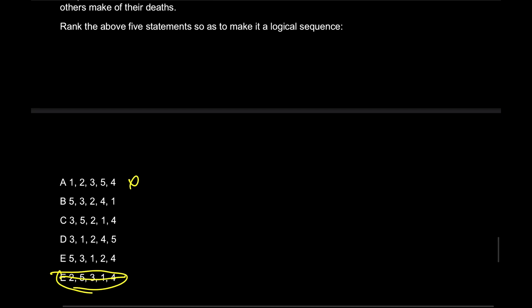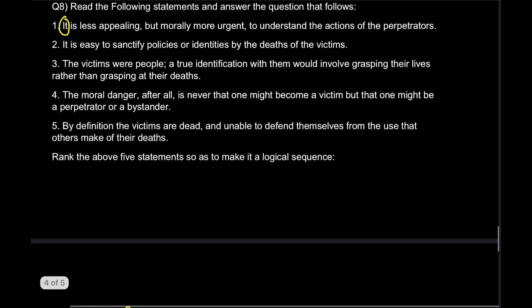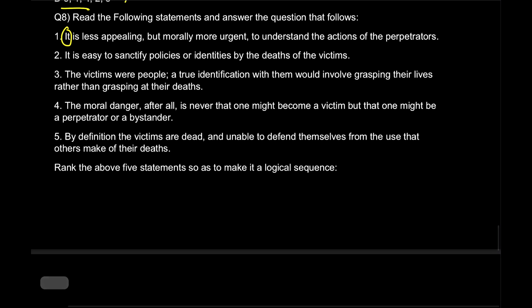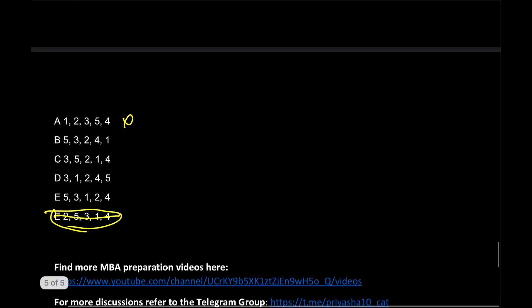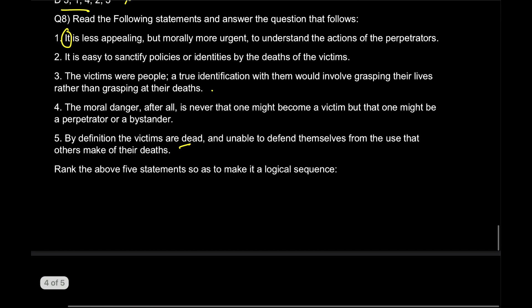Then number three is 'the victims were people. A true identification with them would involve grasping their lives rather than grasping at their death.' Sounds good to me. Number five: 'By definition the victims are dead.' This is continuation of idea. Five cannot be the opening sentence. B gone, E gone. Now I have two options with three as the opening sentence, but try to figure out a relation between three and five or three and one.